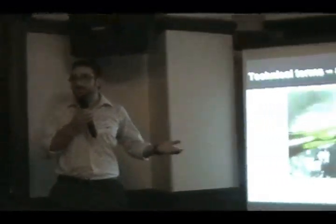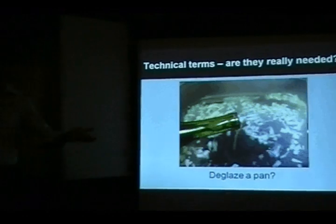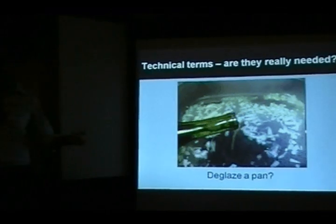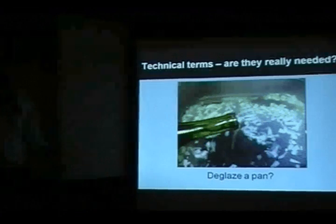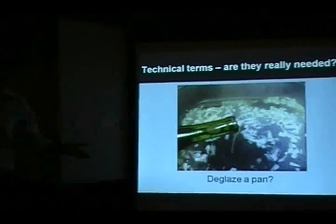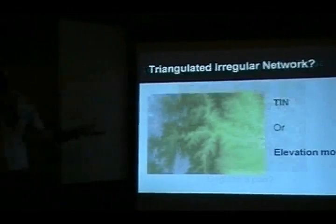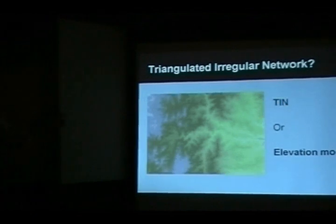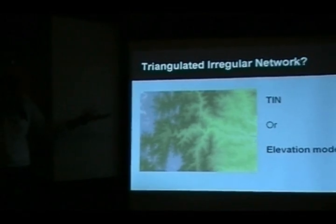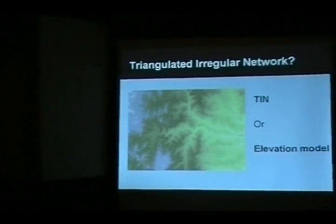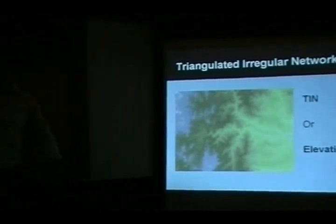Technical terms — are they really needed? If a chef is teaching someone to cook for the first time, does he need to say 'deglaze the pan'? Or is it better to just say 'add a bit of wine'? Deglaze is technical; adding wine is easy. Similarly, triangulated irregular networks — do we need to call them a TIN? No one knows what a TIN is. Can we just call it an elevation model or a surface? I think that's a lot easier for people to understand.